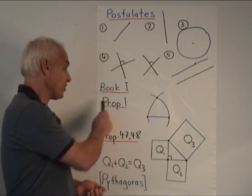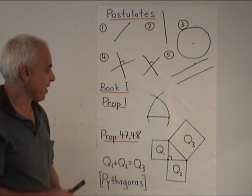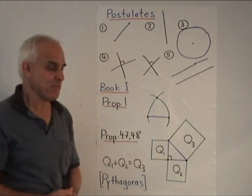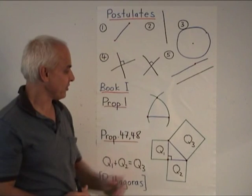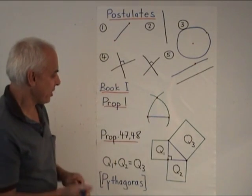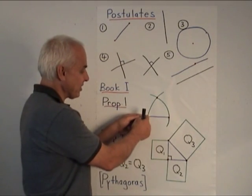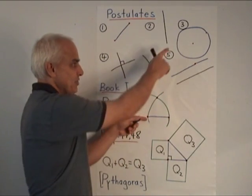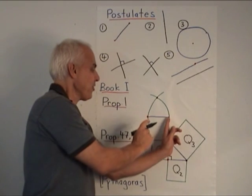So the first proposition is the construction of an equilateral triangle on a given base. So I suppose you're given that line there, and you want to construct an equilateral triangle on it. Well, what Euclid says is that you put your compass there and draw a circle through that point. So that's using the third postulate.